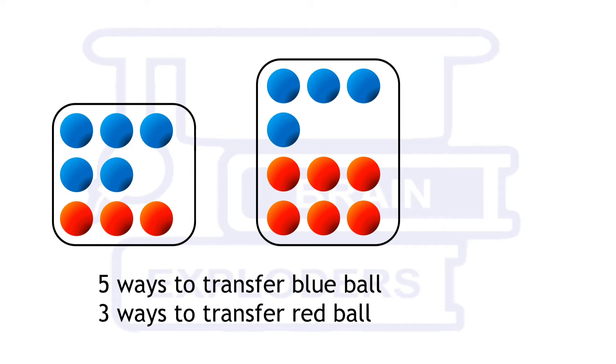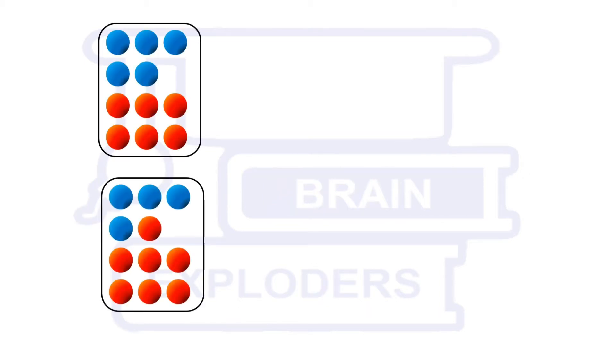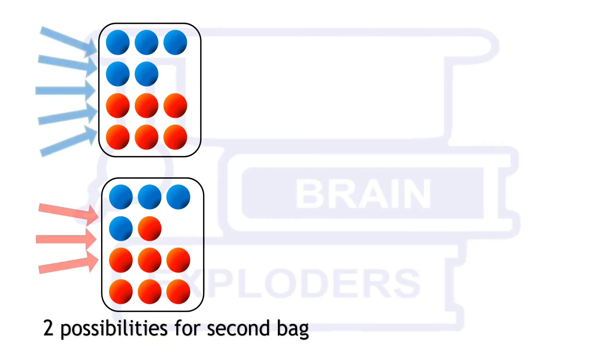When one ball is transferred to second bag then there are two possibilities for the second bag. In first case there are five blue and six red balls because one blue ball is added in the second bag. Similarly in the second case there are four blue and seven red balls.